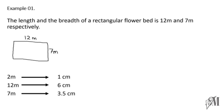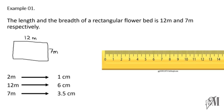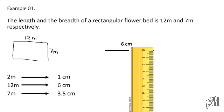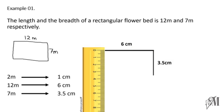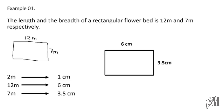Take a ruler and draw a line — instead of 12 meters we draw 6 centimeters. Then draw the breadth of 3.5 centimeters, then again 3.5 centimeters on the other side for the next breadth, and finally join the lines to complete the rectangle. This is our scale diagram.